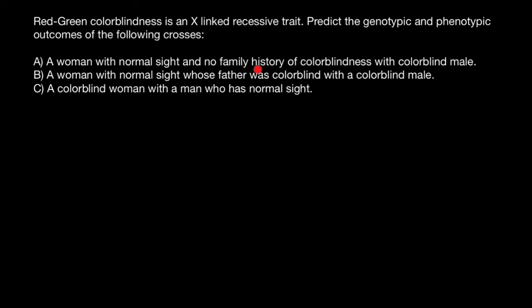The first variant: a woman with normal sight and no family history of colorblindness with a colorblind male. We assume that this woman has two normal X chromosomes. I am going to use green color to specify a normal X chromosome with no defective allele. The male has colorblindness, so his genotype would be a defective X chromosome and a normal Y chromosome — of course, only one gene on this chromosome is defective, not the whole chromosome.